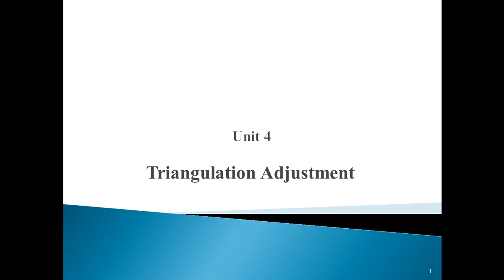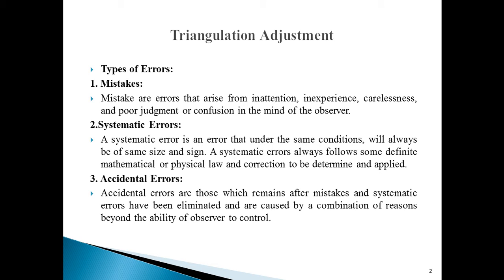Let's start Unit 4: Triangulation Adjustment and Theory of Errors. The first point is types of errors. Mistakes are errors that arise from inattention, inexperience, carelessness, and poor judgment in the mind of the observer. Systematic errors always have the same size and sign under the same conditions, following a definite mathematical or physical law, so corrections can be determined and applied. Accidental errors remain after mistakes and systematic errors have been eliminated and are caused by reasons beyond the ability of the observer to control.